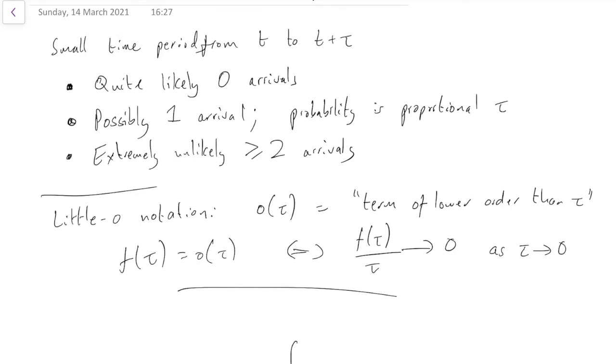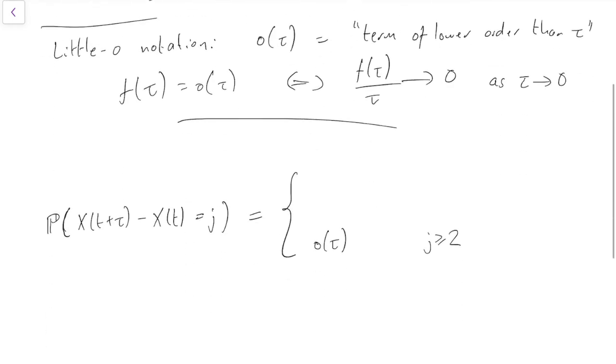We said that there possibly could be one arrival, but probability proportional to tau. So that should be something like lambda tau for j equals 1. But it might not be exactly that. It might just be roughly proportional. So let's have lambda tau plus little o of tau just to allow for it. It might not be exactly lambda tau.